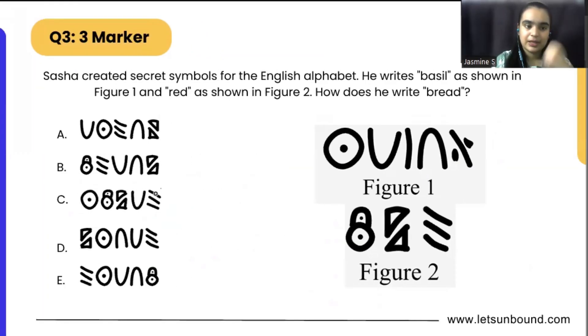Sasha created secret symbols for the English alphabet. He writes Bessel as shown in figure 1 and red as shown in figure 2. How does he write bread?